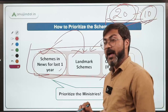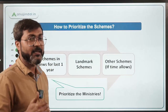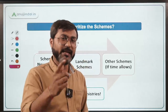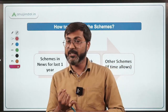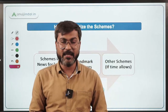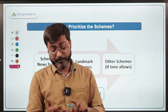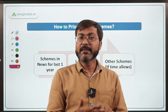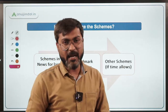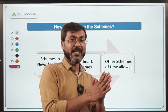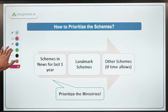You also have to prioritize by ministry. In the RBI Grade B examination, certain ministries feature prominently: Ministry of Finance, Ministry of Agriculture and Rural Development, Ministry of Social Justice and Empowerment, Ministry of MSME, Ministry of Commerce and Industry, Ministry of Health and Family Welfare, and Ministry of Women and Child Development — these all feature heavily due to their relevance to economy and social issues.